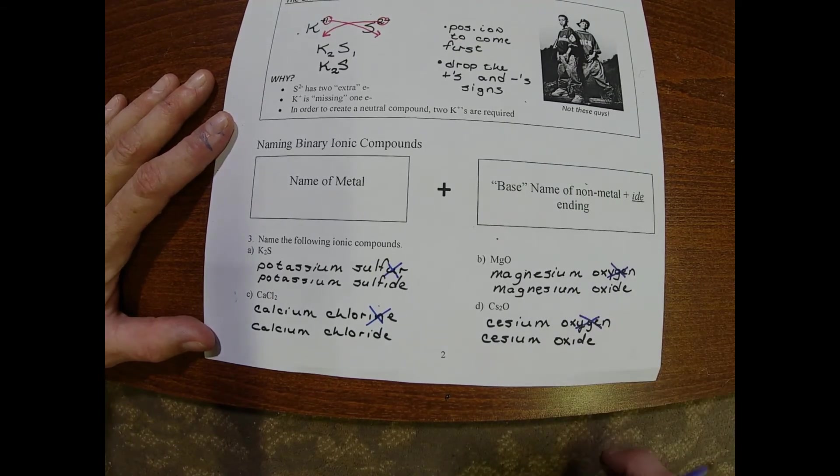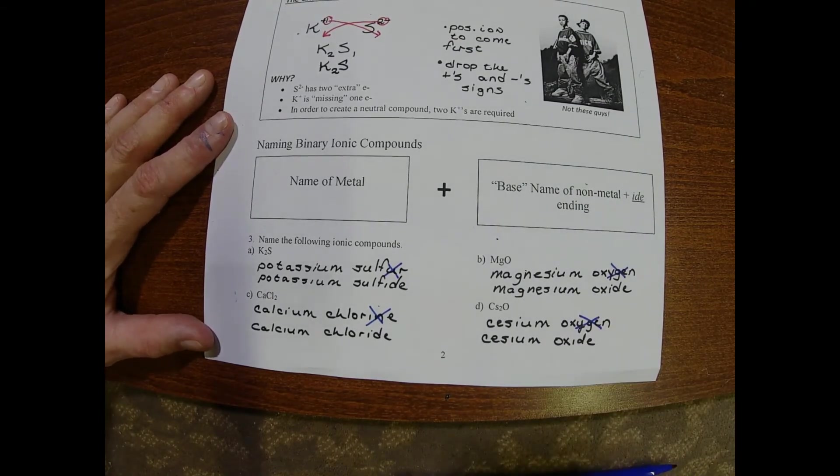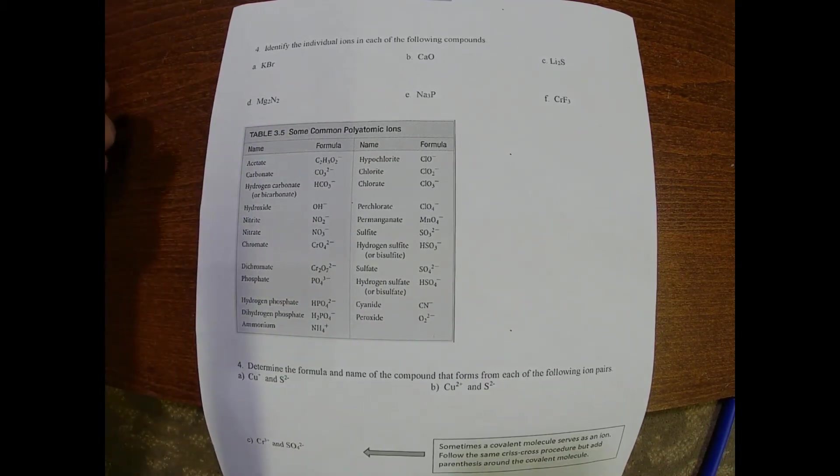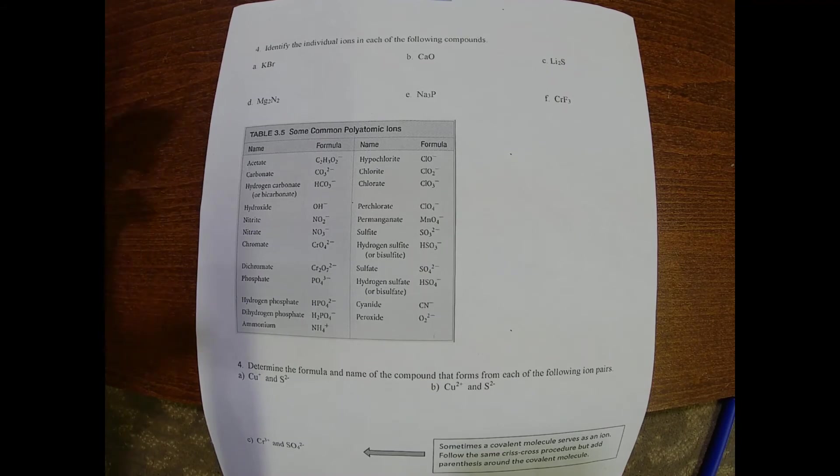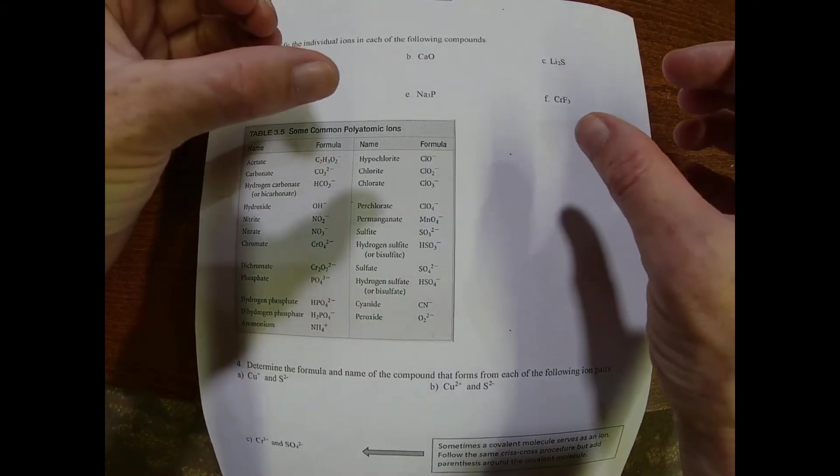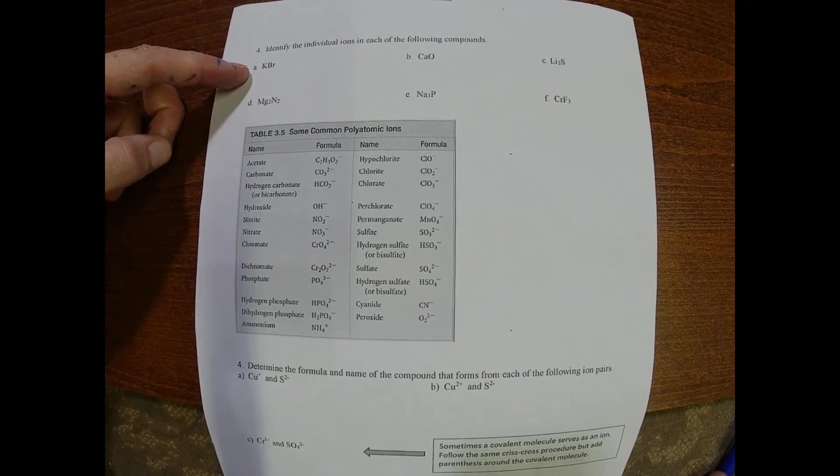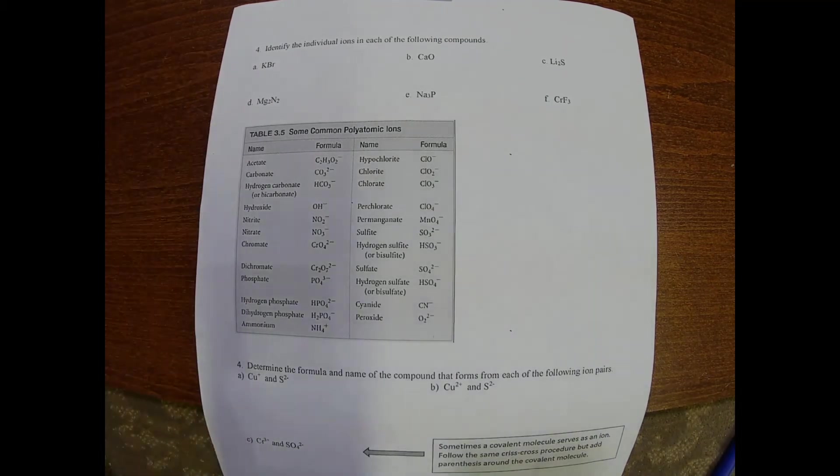We want to be able to go in all different directions when it comes to our compounds. We want to be able to take our charges and crisscross them down, but we also want to be able to kind of undo the crisscross, think about the charges on the ions before they came together.